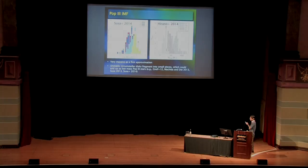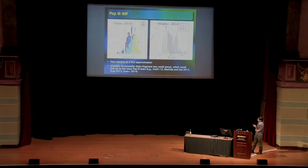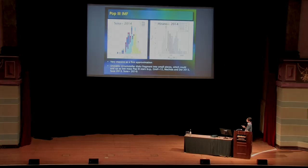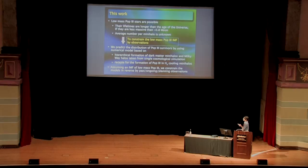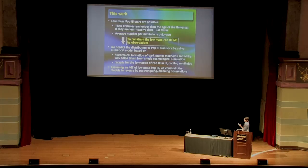However, unstable circumstellar disks can also form, and these unstable disks fragment into small pieces which could end up as low-mass Pop 3 stars. If their mass is less than 0.8 solar masses, their lifetime is longer than the age of the universe, so we should be able to observe them in the Milky Way. Some low-mass Pop 3 stars could fall onto the central protostar and merge with it, but some could be ejected from the dense central region and survive to the current universe. We therefore need to predict theoretically how many low-mass Pop 3 stars could survive in the Milky Way in order to constrain the low-mass Pop 3 star IMF by observations.